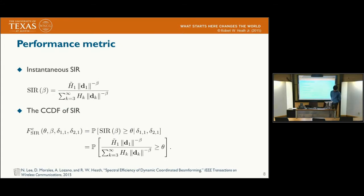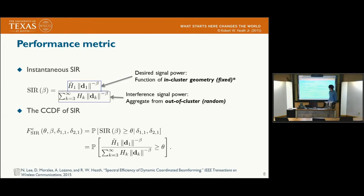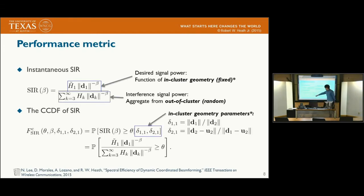Here we introduce the performance metric. We will look at SIR, which is characterized by using enclosure geometry, which is fixed. More particularly, the enclosure geometry is defined as the ratio between the desired BS distance and the cooperating BS distance. We also consider the coverage probability of the SIR.